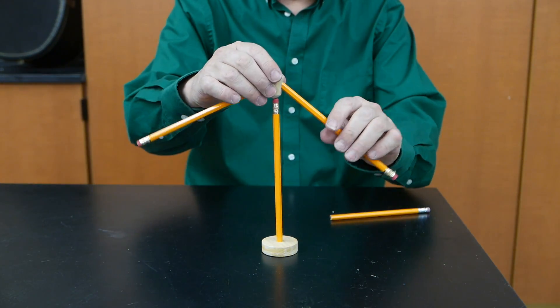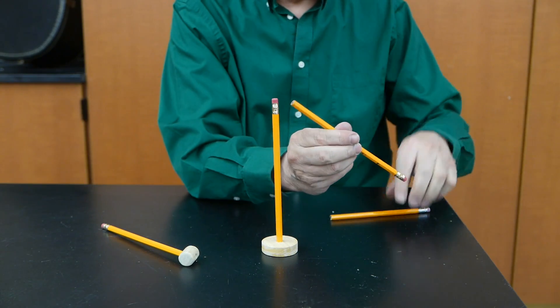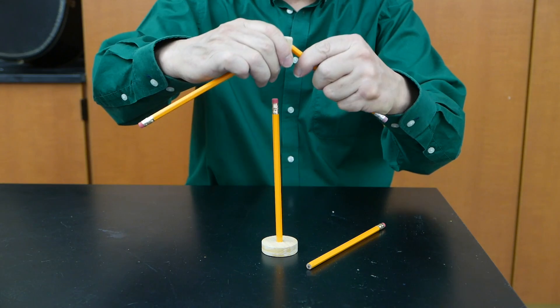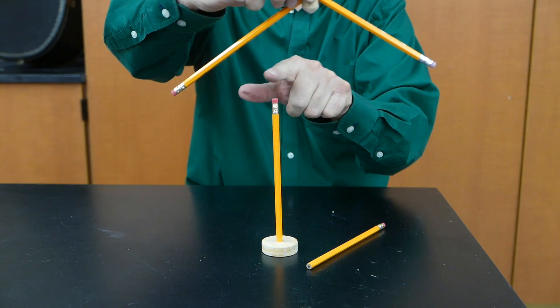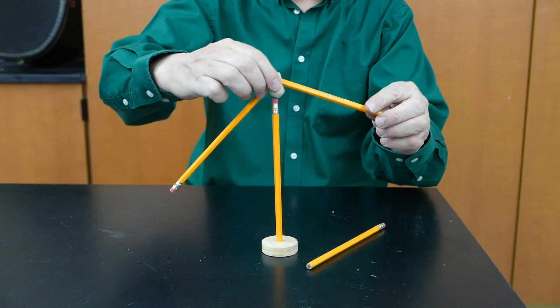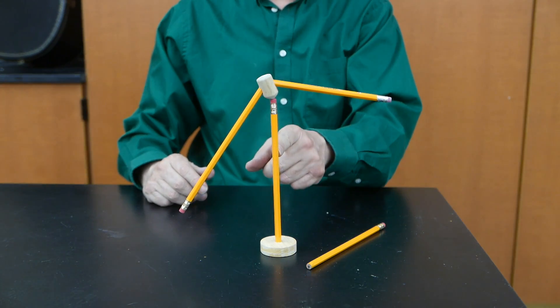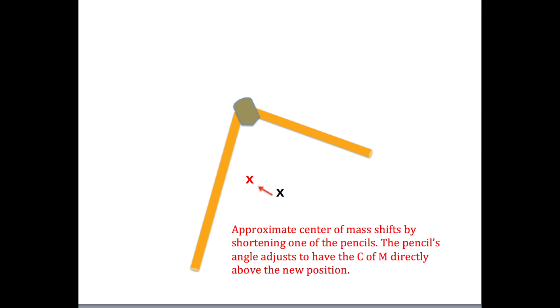Now what happens if I make one of the pencils shorter? I'll take this one off and replace it with this shorter one. We're actually going to shift that center of mass over to about this position here. Now I'll put it back on the pencil support. The pencils adjust themselves so the support is directly above the center of mass.